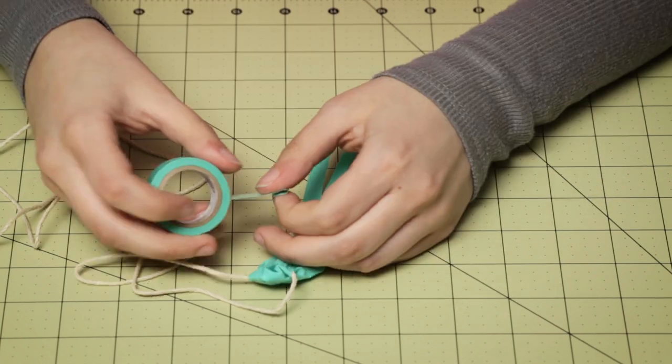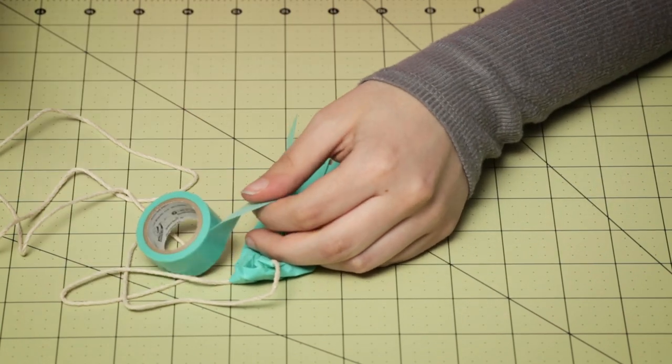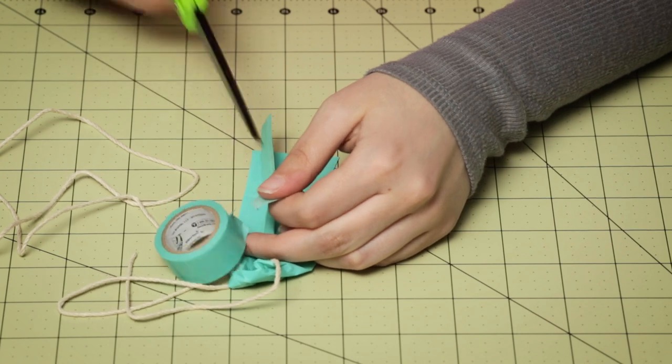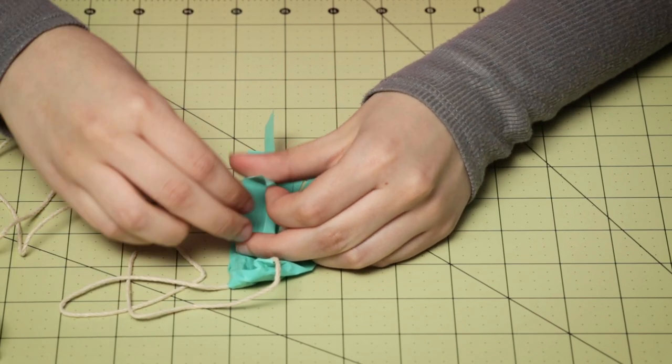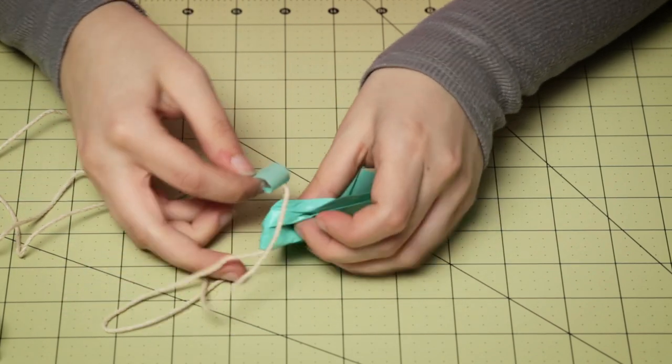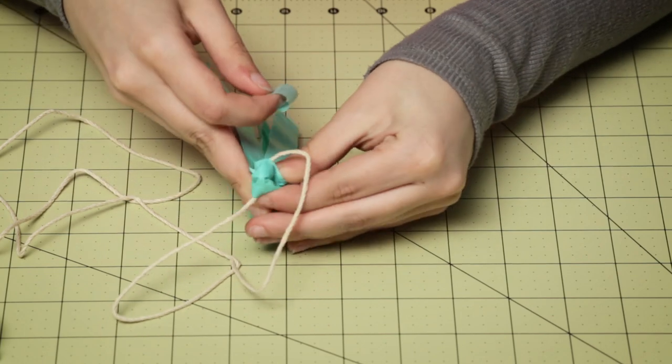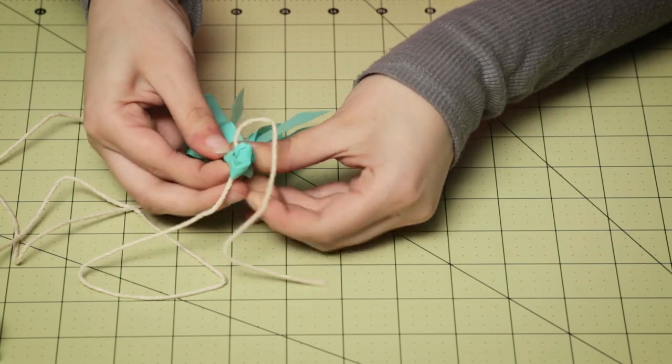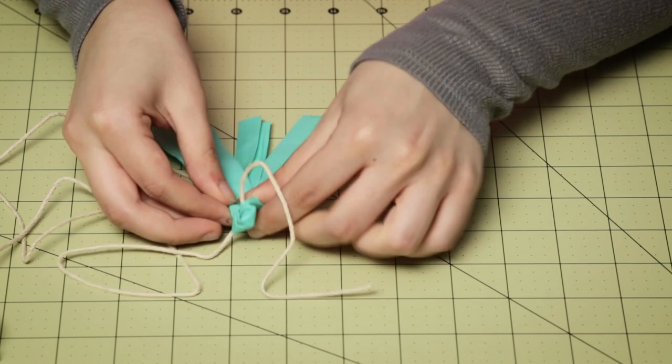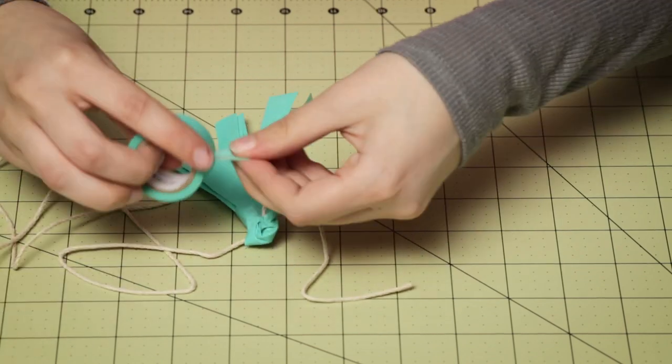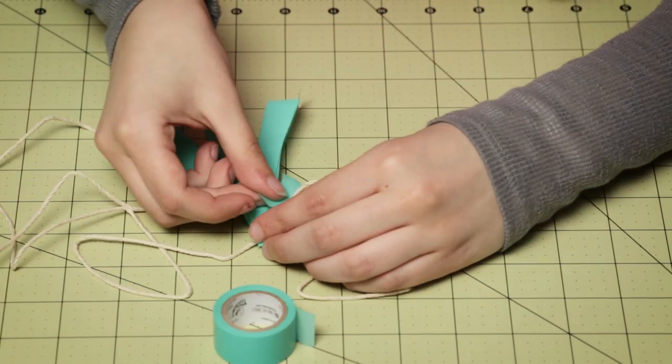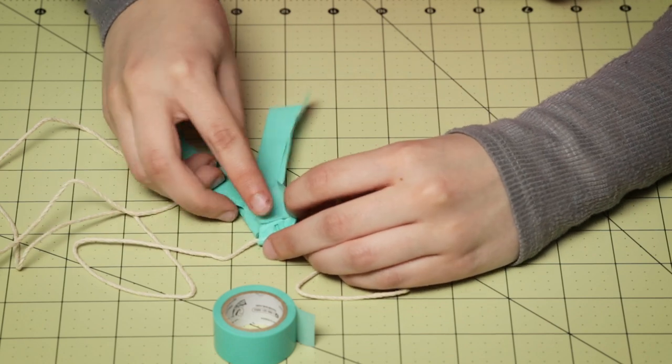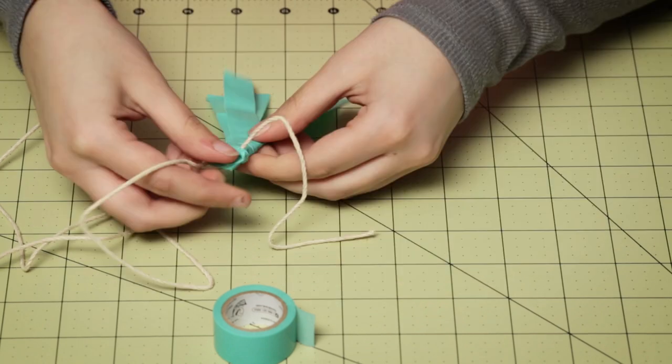Now I'm going to take my washi tape once again and just cut off a small strip. And just wrap it around really tightly. And you might need to add another strip just to secure it, just like so.